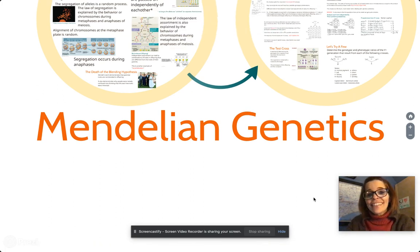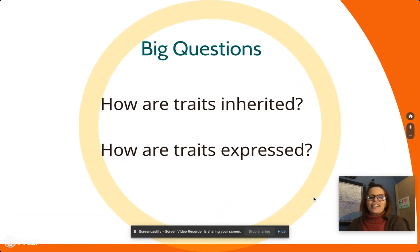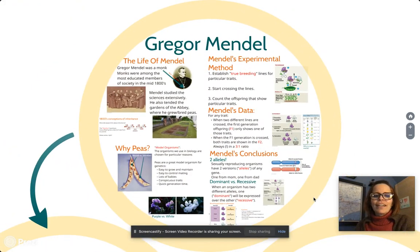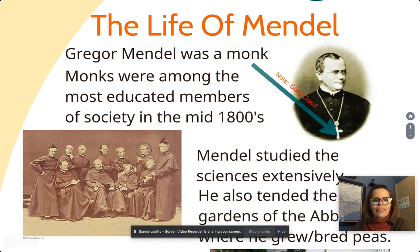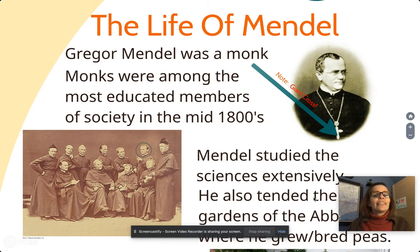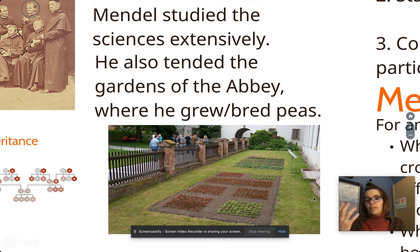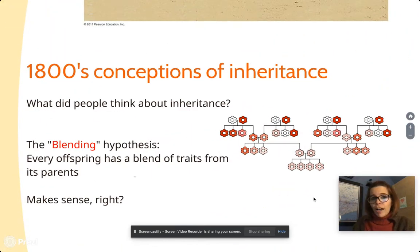Ladies and gentlemen, we are going to talk about Mendelian genetics, Punnett squares, and a fellow named Mendel — how traits are inherited and how they are expressed. Let's start with Gregor Mendel. Gregor Mendel was an Austrian monk who studied genetics. He was really into science and had access to gardens in his monastery. He meticulously studied crossing different plants and the offspring he got, keeping all kinds of notes. We now refer to him as the father of modern genetics.